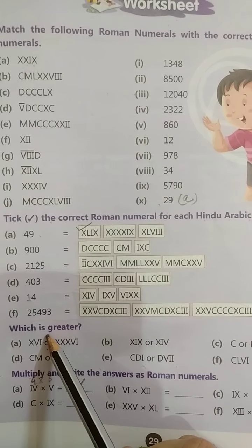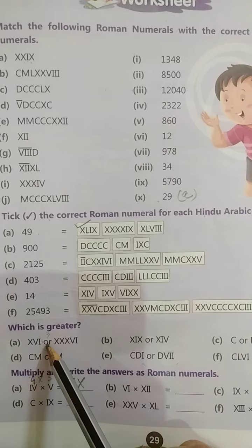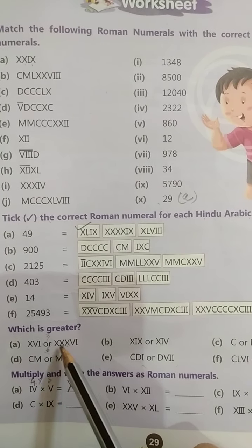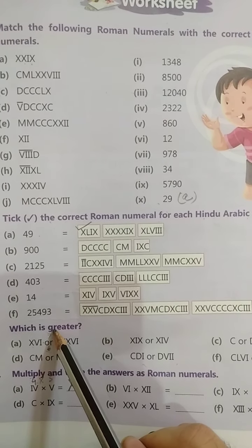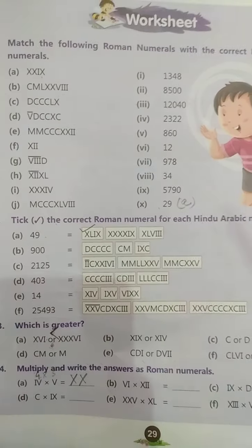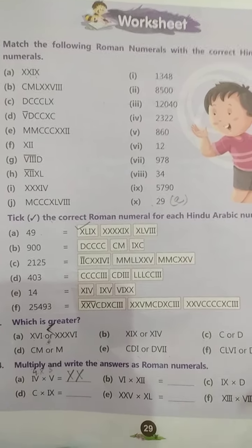Isko kya karna hai? Aapko greater than, which is greater. To aap aise sign laga lenge, greater than, less than. Jo bhi hoga. Jaise ismein dekhiye, yeh nahi hai, yeh hai, 36. Yeh kya hai? 16. To yeh aayega greater. Aap book mein hi kar lijiye. Okay, students. Aapko yeh saara work book mein complete karna hai. Thank you.